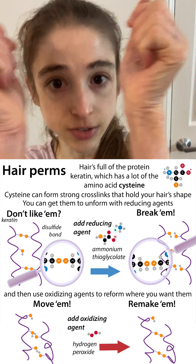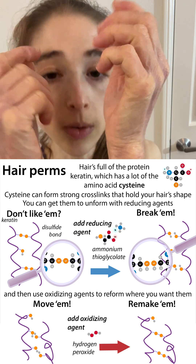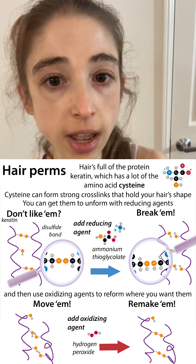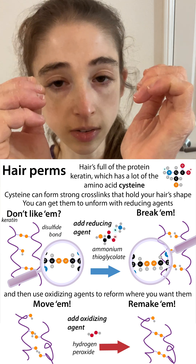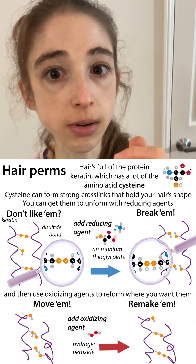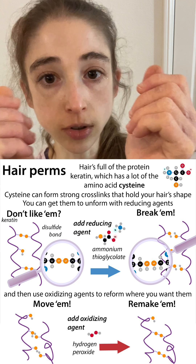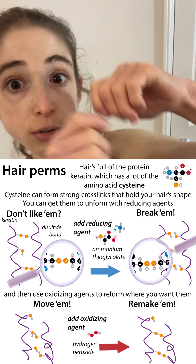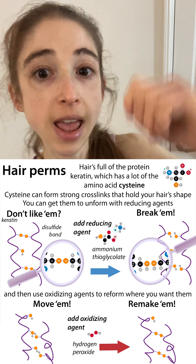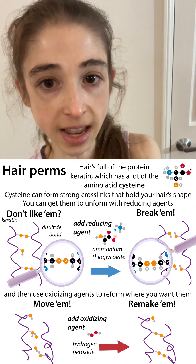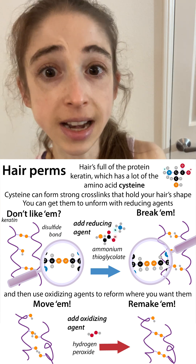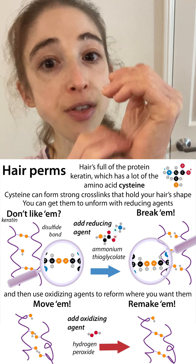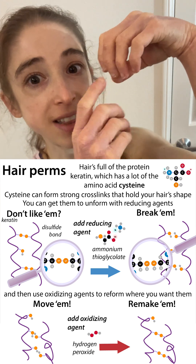So say you have straight hair and you want curly hair. What people can do is introduce a reducing agent. A reducing agent is going to remove the crosslinks — something like ammonium thioglycolate can remove those crosslinks. And now when those crosslinks are removed, the stylist can curl the hair around a curler. Then they add an oxidizing agent such as hydrogen peroxide that allows the crosslinks to form again.